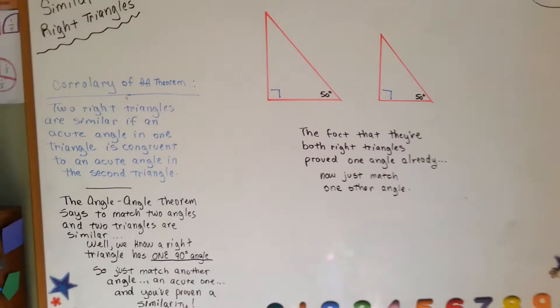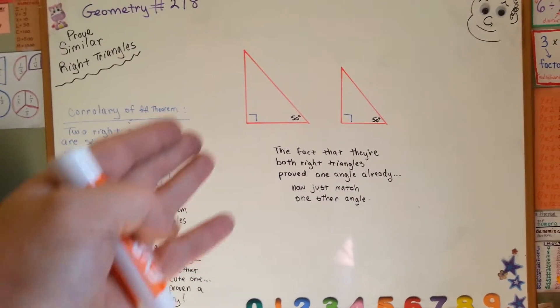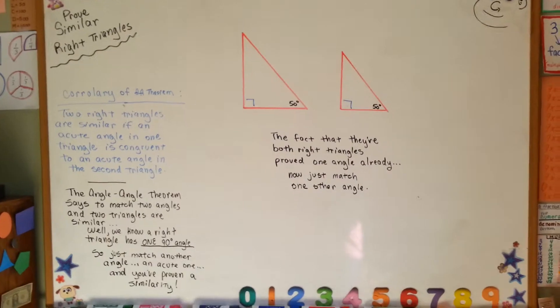Isn't that great? Because the other one's already done for you. It stated they were right triangles. So that angle's done. You just need one more.